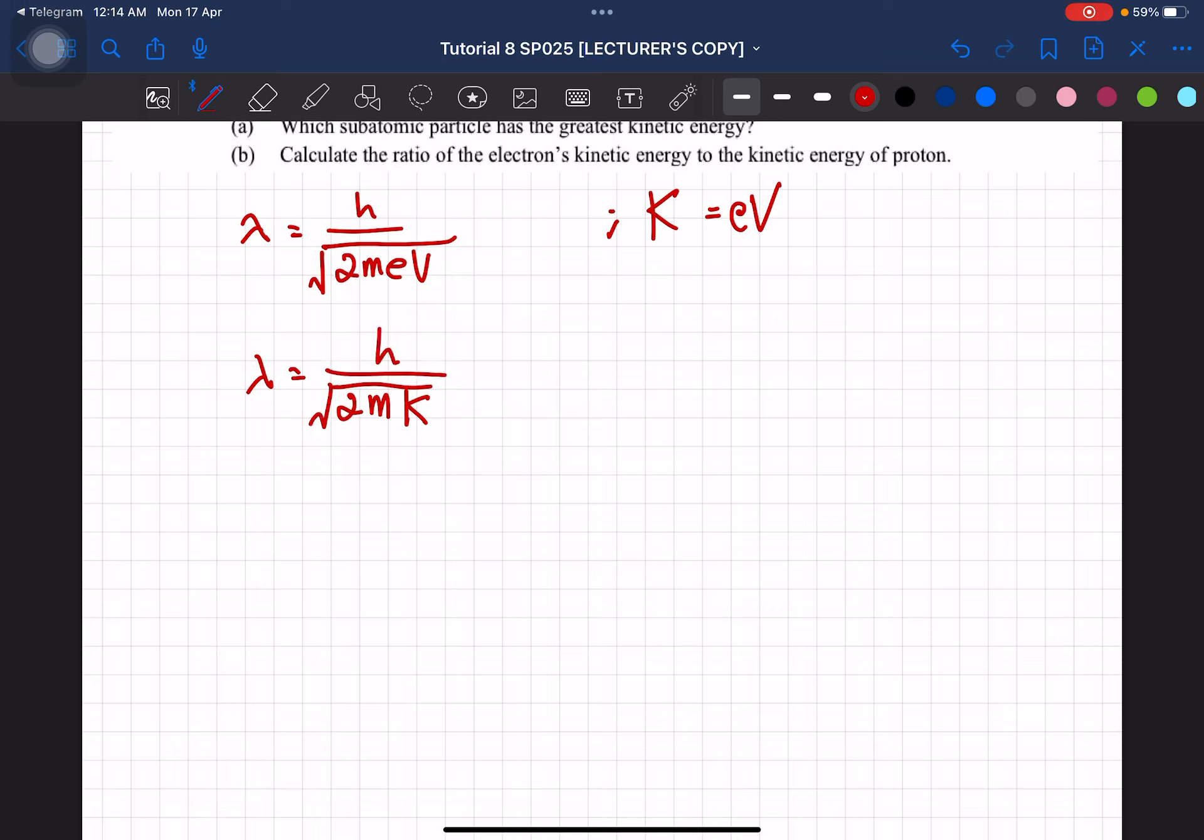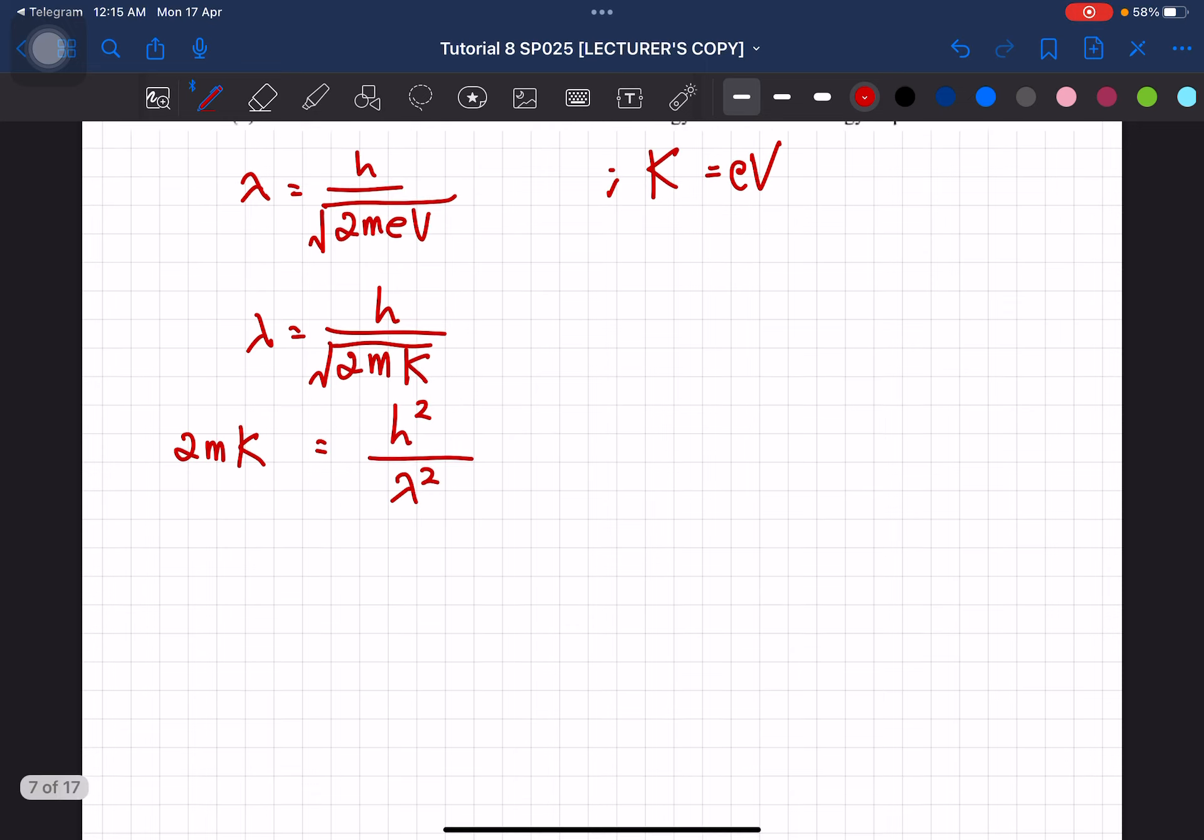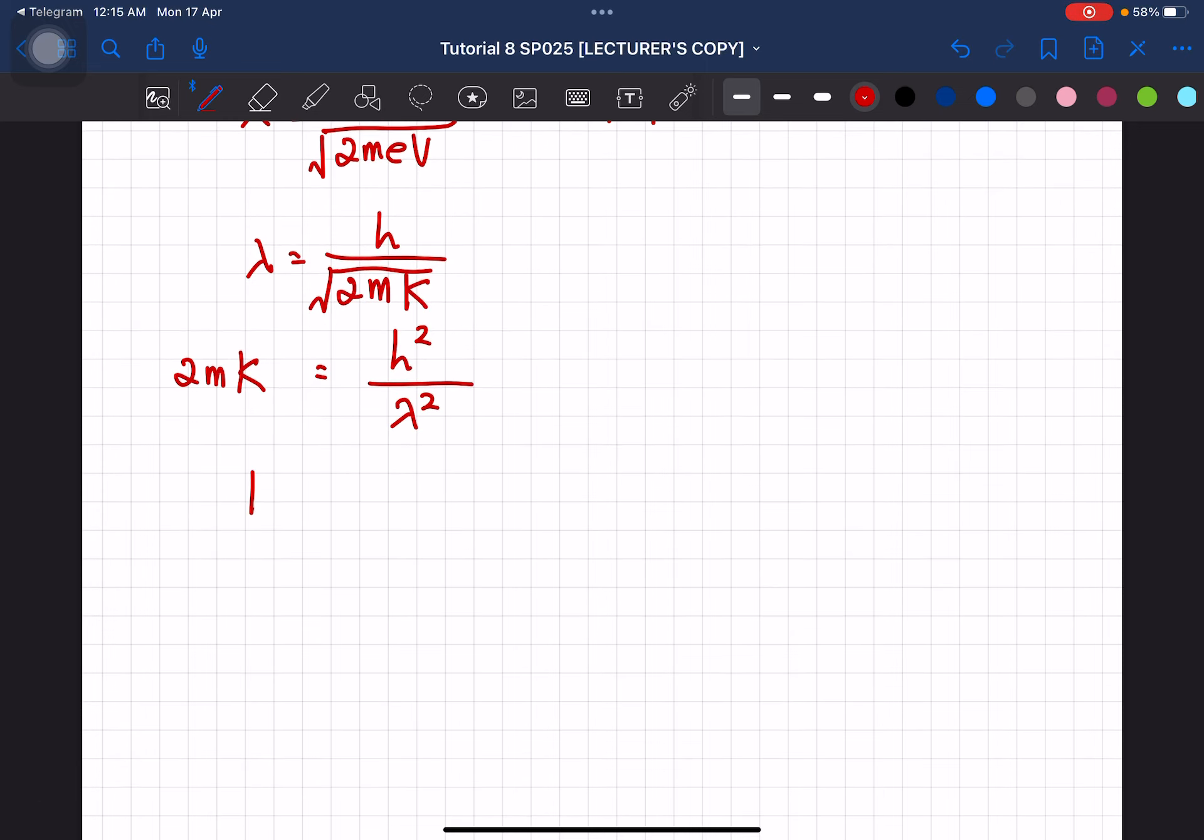So now we want K to be the subject, so kita rearrange lah. So it's going to be square root of 2mK equals h over the wavelength. So since sekarang ni ada square root, so bila square root disini pindah pergi sebelah, dia akan jadi square. So disini dia akan ada square lah for each of these variables. So since kita mau dia kinetic energy je, so kita letak lah K di depan.